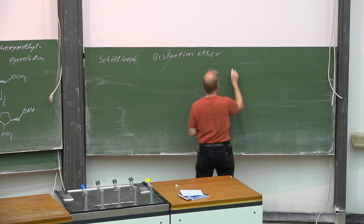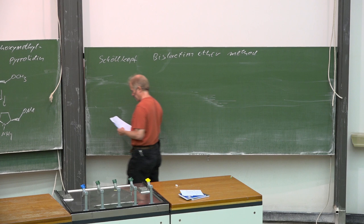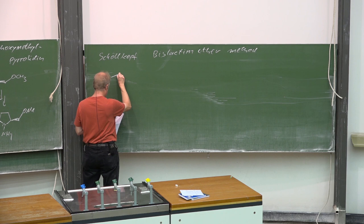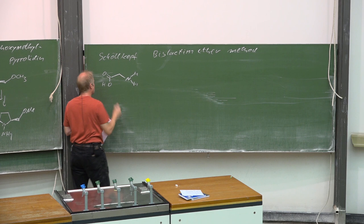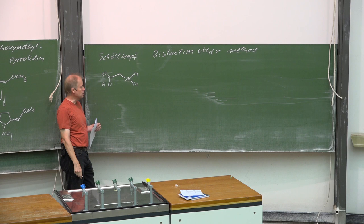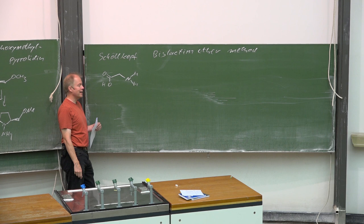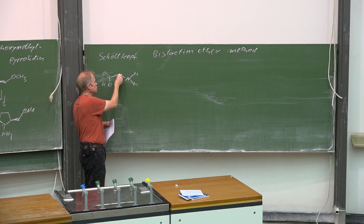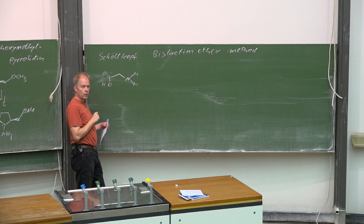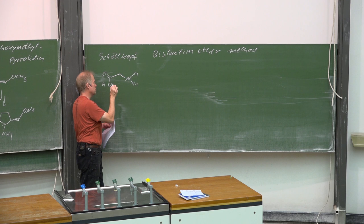What the Schöllkopf bislactim ether method tries to achieve is starting with the achiral amino acid glycine and introducing a functional group here—an alkylation at this CH2 group—in order to generate a chiral center, and they wanted to do that enantioselectively.